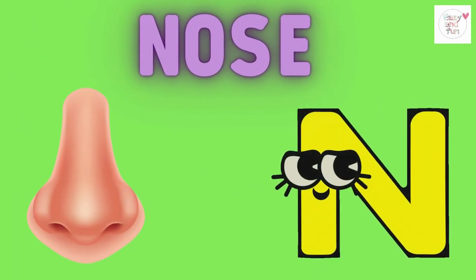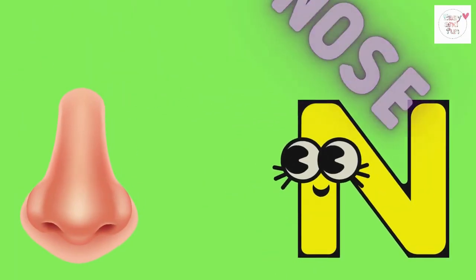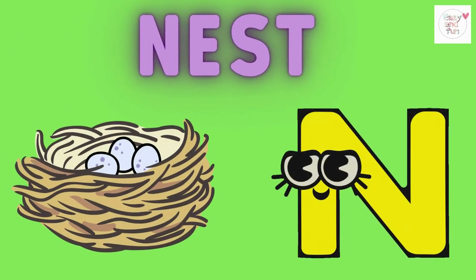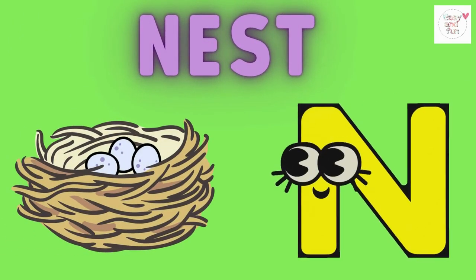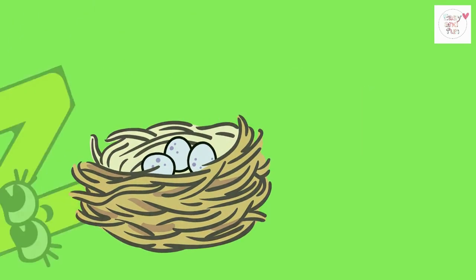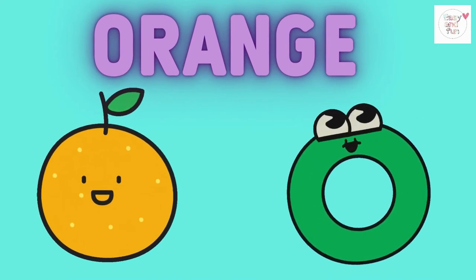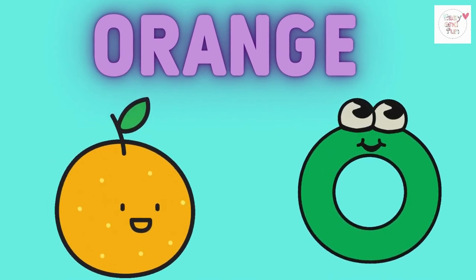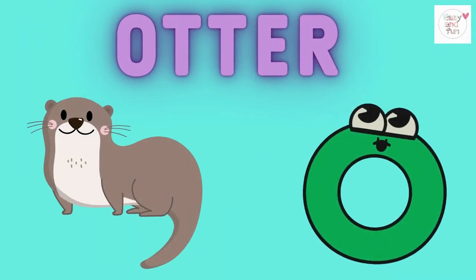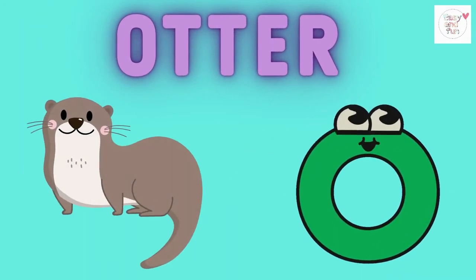N is for nose, n-n-nose. N is for nest, n-n-n-nest. O is for orange, o-o-orange. O is for otter, o-o-otter.